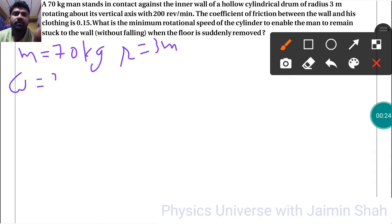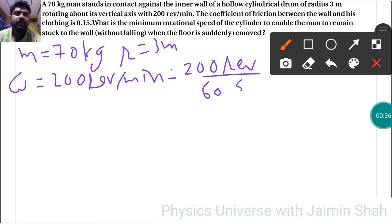So here we have omega 200 revolutions per minute. So that will be 200 revolutions per minute, minute will be converted into seconds, so 60 seconds.